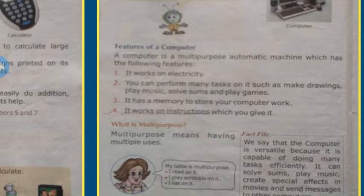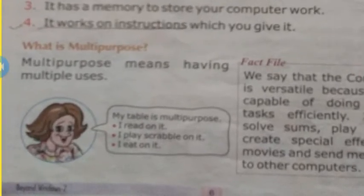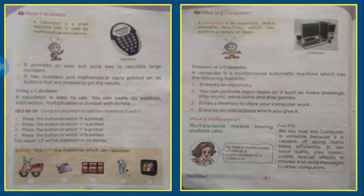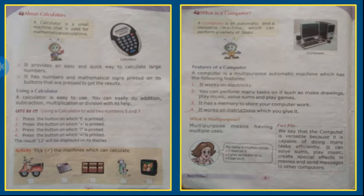What is multipurpose? Multipurpose means having multiple uses. For example, a girl is saying my table is multipurpose — I read on it, I play scrabble on it, I eat on it. Why is the computer also multipurpose? Because we can play music, do sums, write something, listen to music, and watch movies. That is why it is multipurpose.